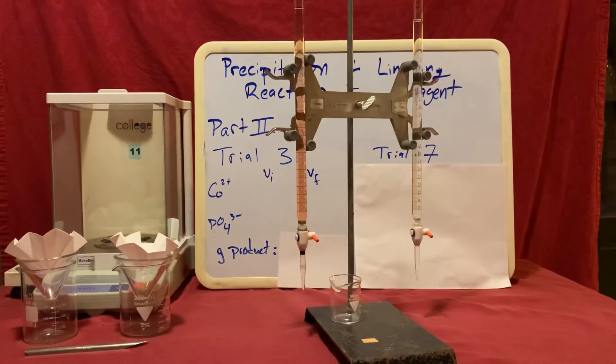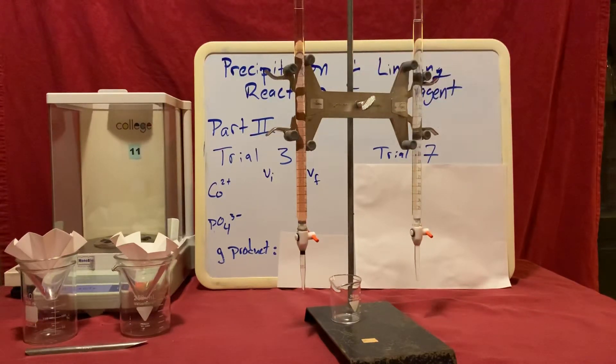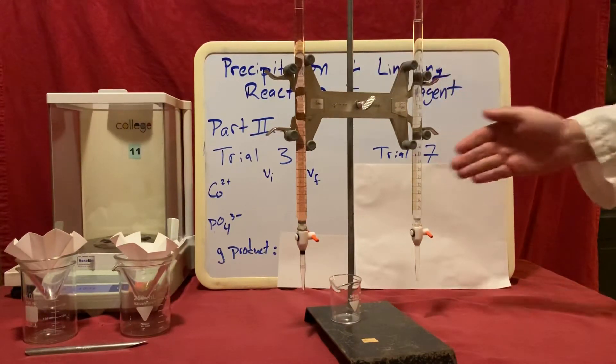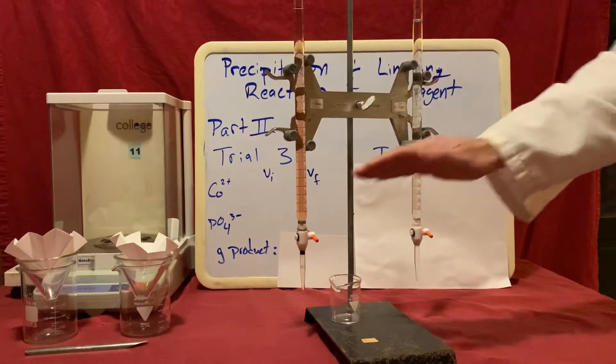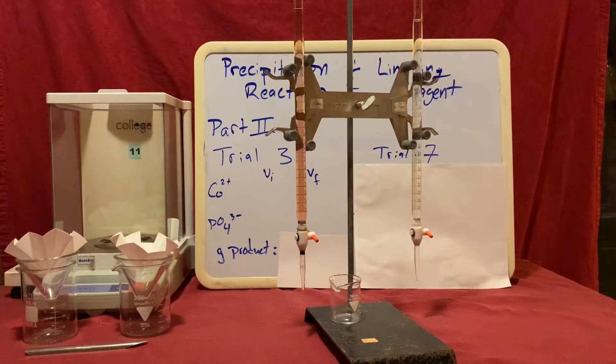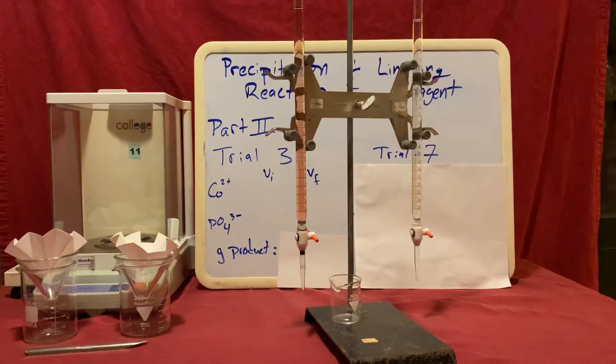For trial 3 I want to dispense approximately 20 milliliters of my cobalt-2 nitrate solution and 8 milliliters of my sodium phosphate solution. In order to do this I'm going to record my initial volume for each and my final volume for each. The difference between those two should be 20 for the cobalt-2 nitrate solution and 8 for the sodium phosphate solution.